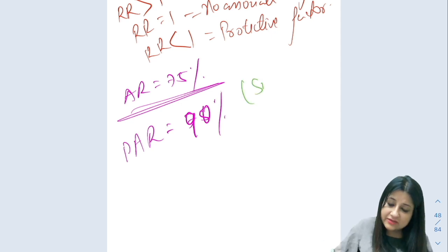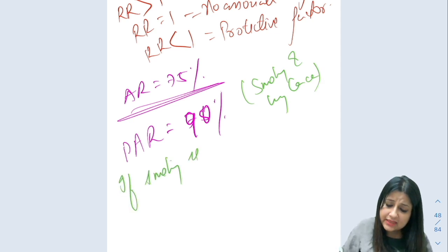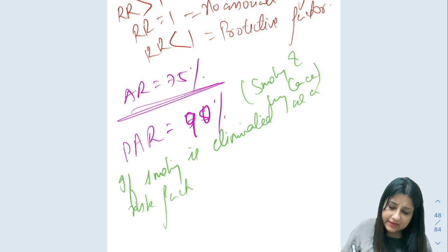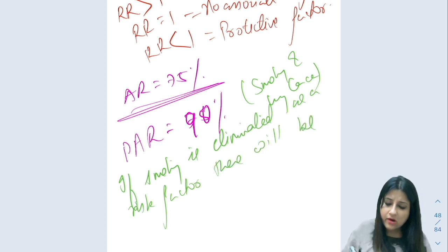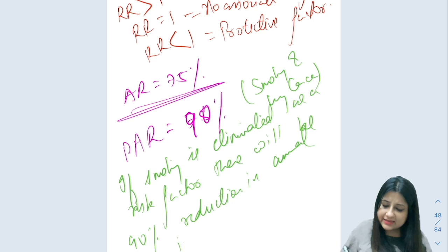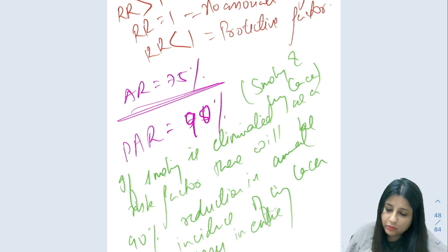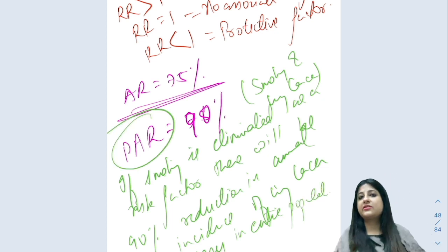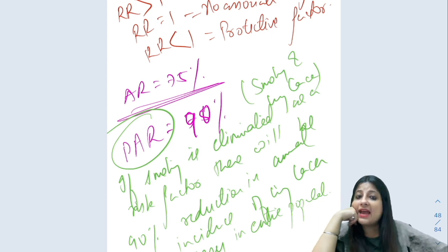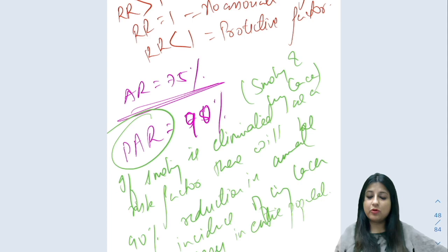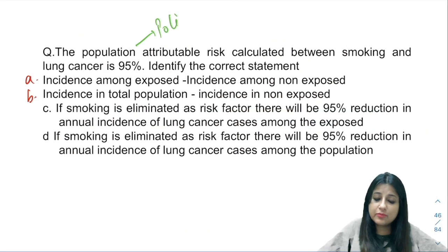A population attributable risk of 90% for smoking and lung cancer simply means that if smoking is eliminated as a risk factor, there will be a 90% reduction in the annual incidence of lung cancer cases in the entire population — because here we are taking the total population. This is why population attributable risk is of importance to policy makers.